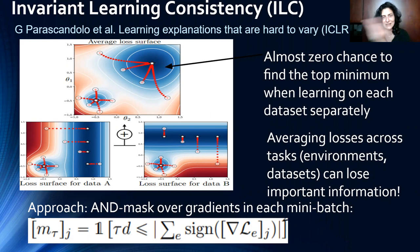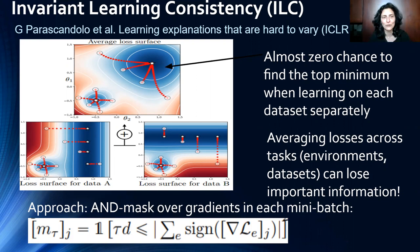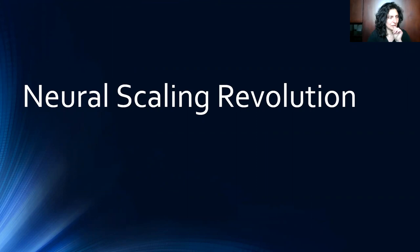The invariant learning consistency approach worked well in practice and there is still follow-up work on analyzing its properties — it's not completely figured out yet. Finally, I want to cover the neural scaling revolution, which is what everyone in AI is talking about and what prevented me from attending in person — there are many efforts around obtaining more compute for open-source AI communities.